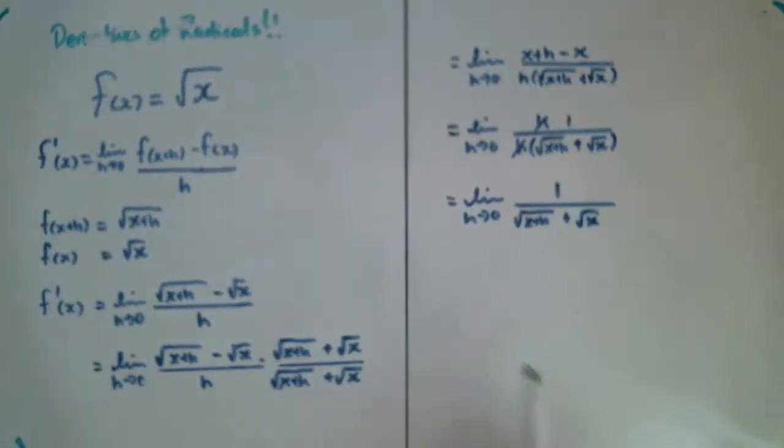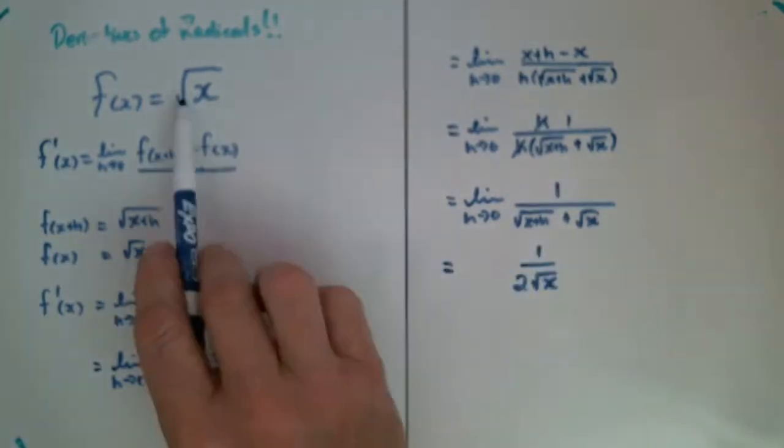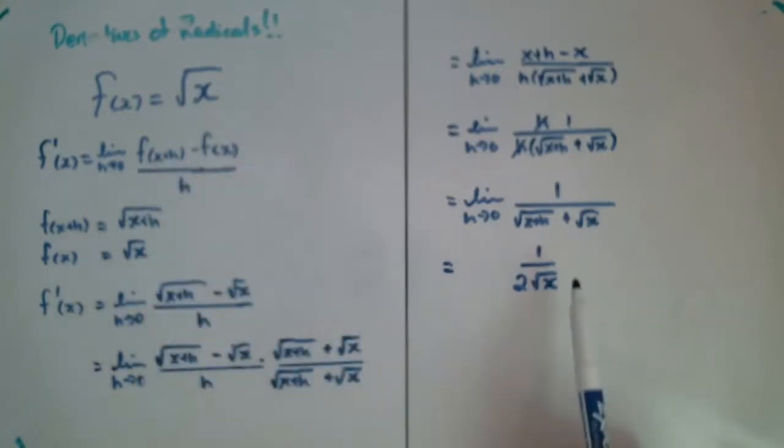Now I have something that when I substitute my 0 for h, I can work with it. And so there we go. A simplified radical expression, f at x equals the square root of x becomes 1 half times 1 over the square root of x. And we're going to see that that's actually consistent with what we call the power rule in the near future.